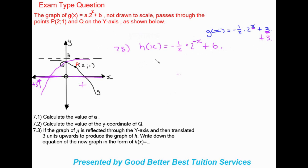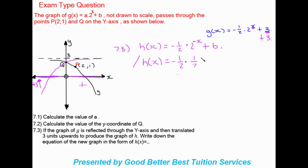There is another way of writing this, since anything to the power of a negative can be expressed as a fraction. Either form will receive the mark. So h(x) equals negative one half times, with x becoming negative — which can also be written as 1 over 2 to the power of x — plus 6. That is the end of this exam-type question.